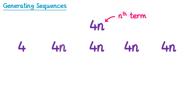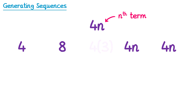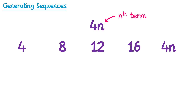To get the second term we substitute n for 2, so 4 times 2 which is 8. For the third term 4 times 3 which is 12. For the fourth term 4 times 4 which is 16. And for the fifth term 4 times 5 which is 20. So this is the sequence that has nth term 4n — it starts 4, 8, 12, 16, 20.